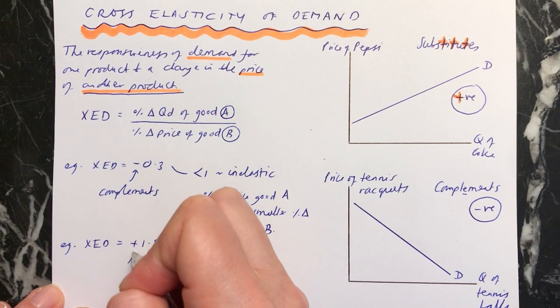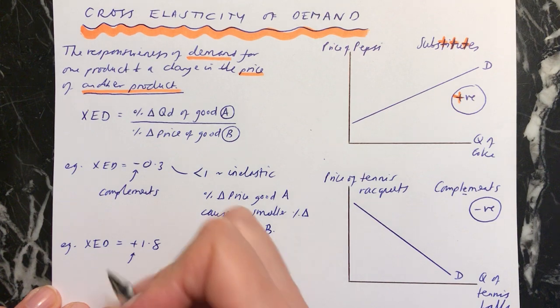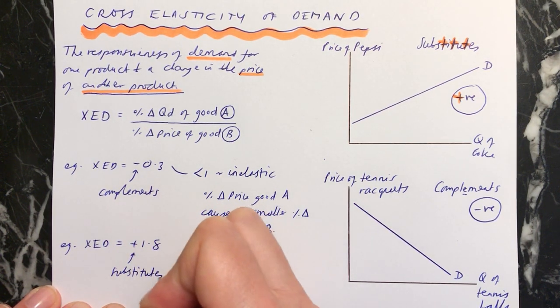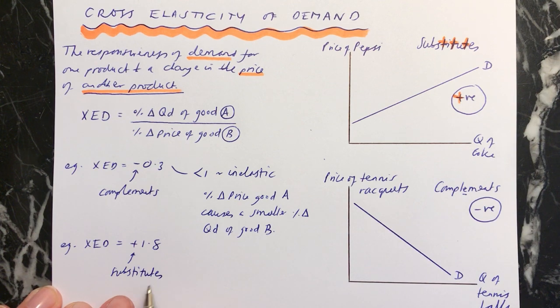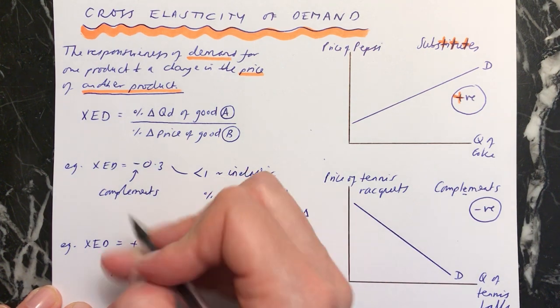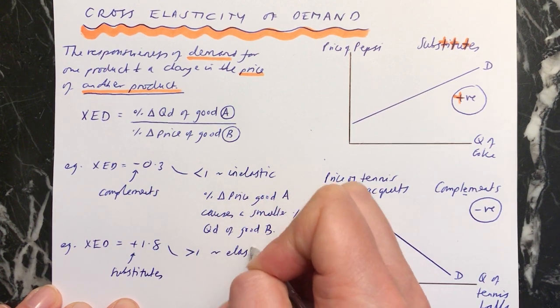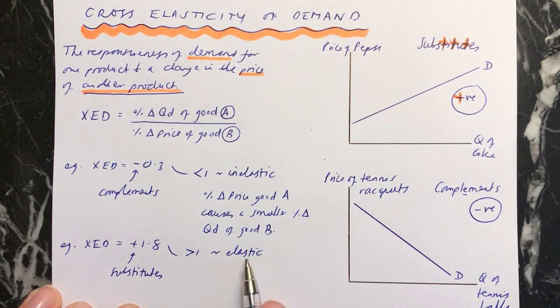Because it's a positive sign, this means that these two products are substitutes. You could have one instead of the other. And because it's 1.8, this is greater than 1. So we know that this is elastic XED, which means that a percentage change in the price of good A causes a greater percentage change in the quantity demanded of good B.